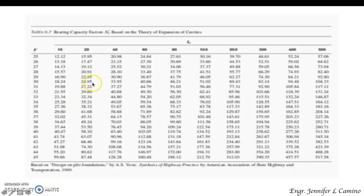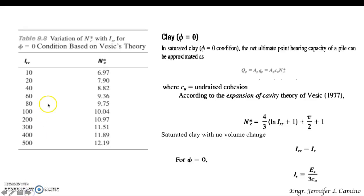We have here a table showing the bearing capacity factors and sigma asterisk. We need the value for the rigidity index I_RR and the angle of friction so that we can have the bearing capacity factor N sub sigma asterisk. There is also a table showing the variations of N sub C asterisk. We need also the value for our reduced rigidity index.